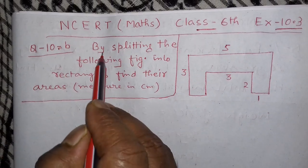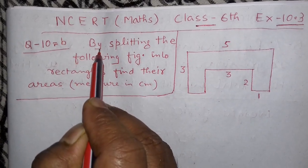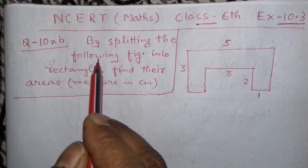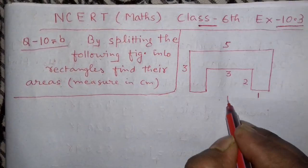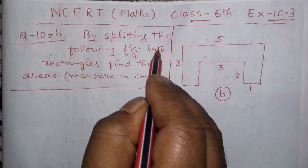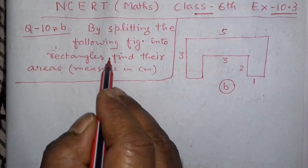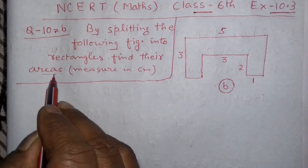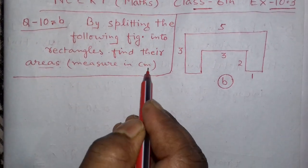Part B says, by splitting the following figure, this is your figure B, into rectangles, find their areas. Measure in centimeters.